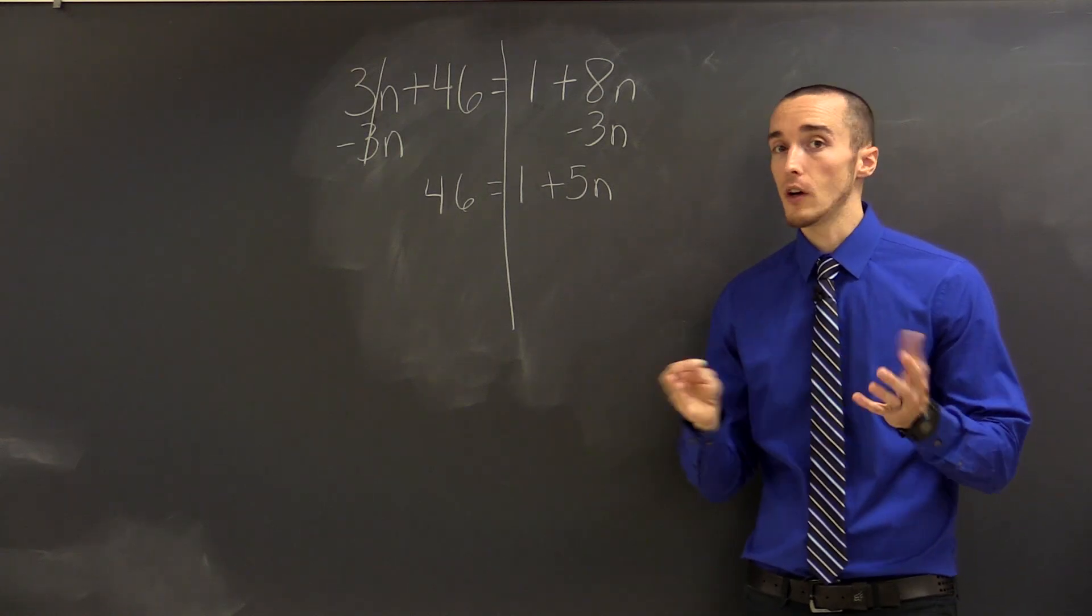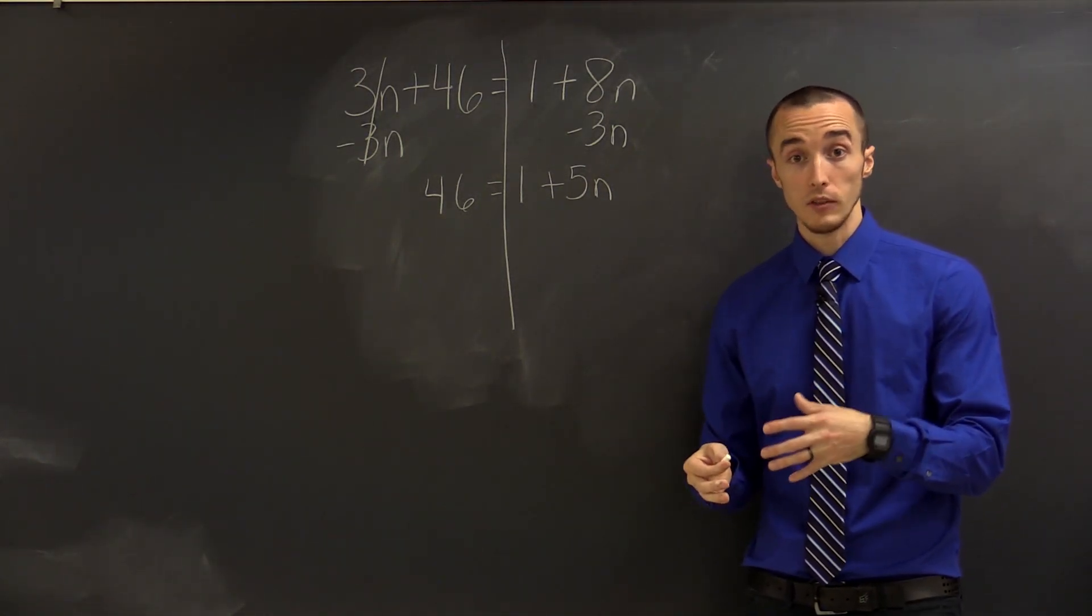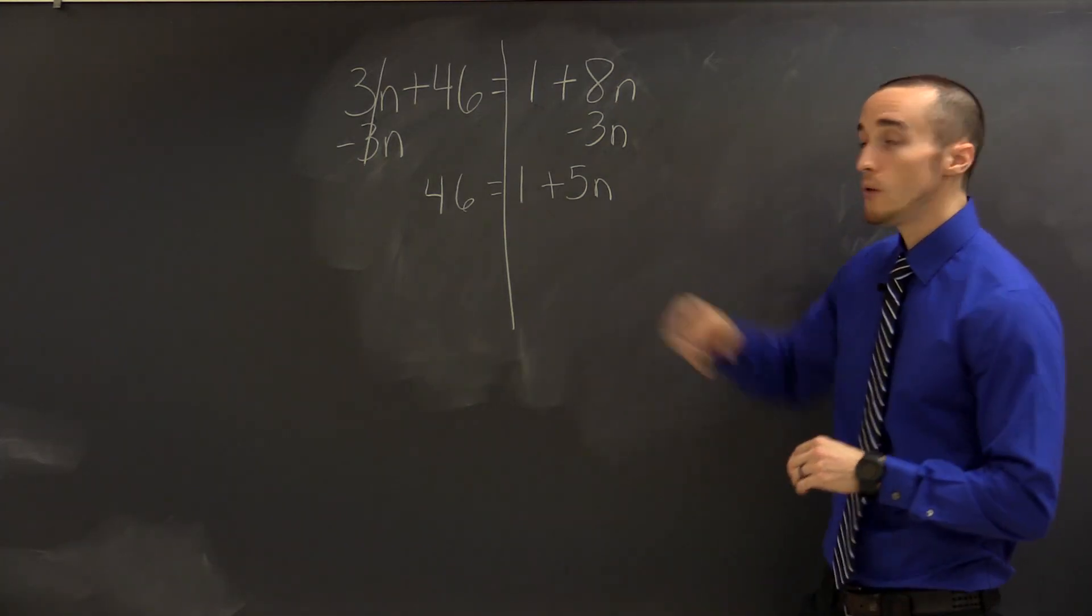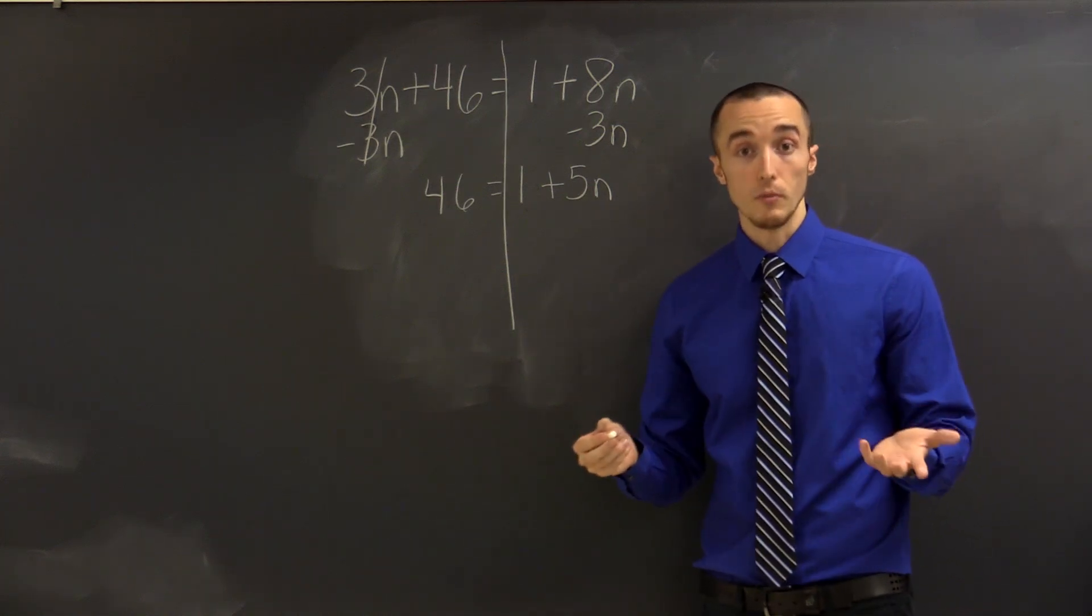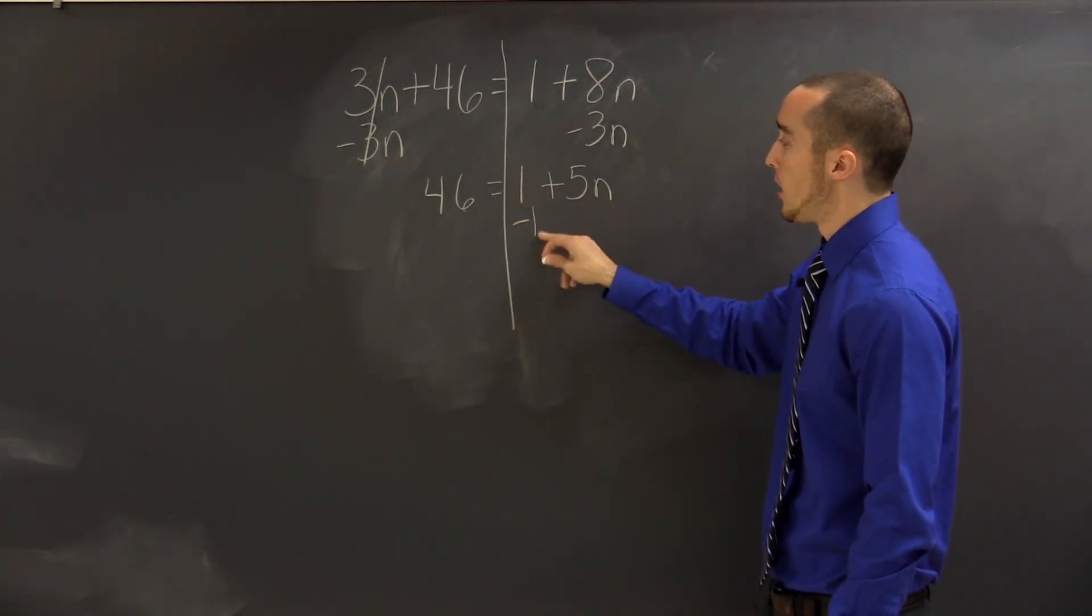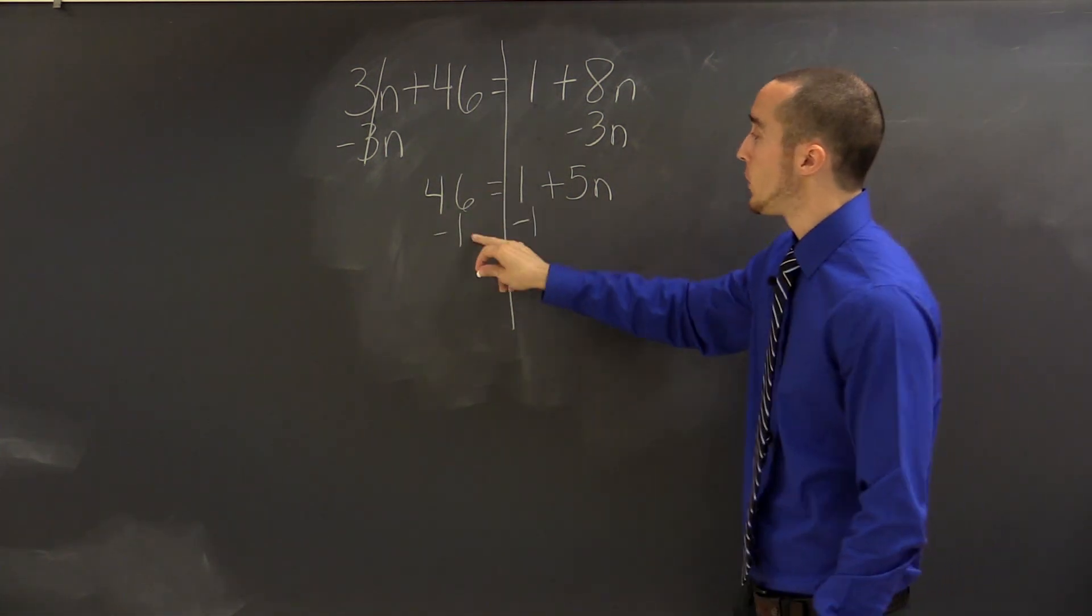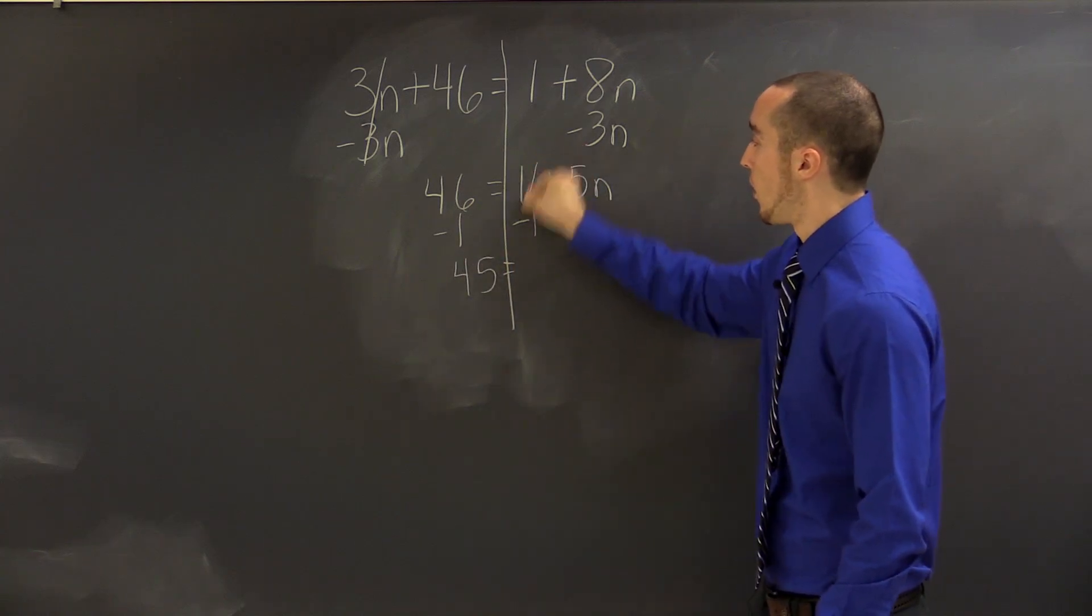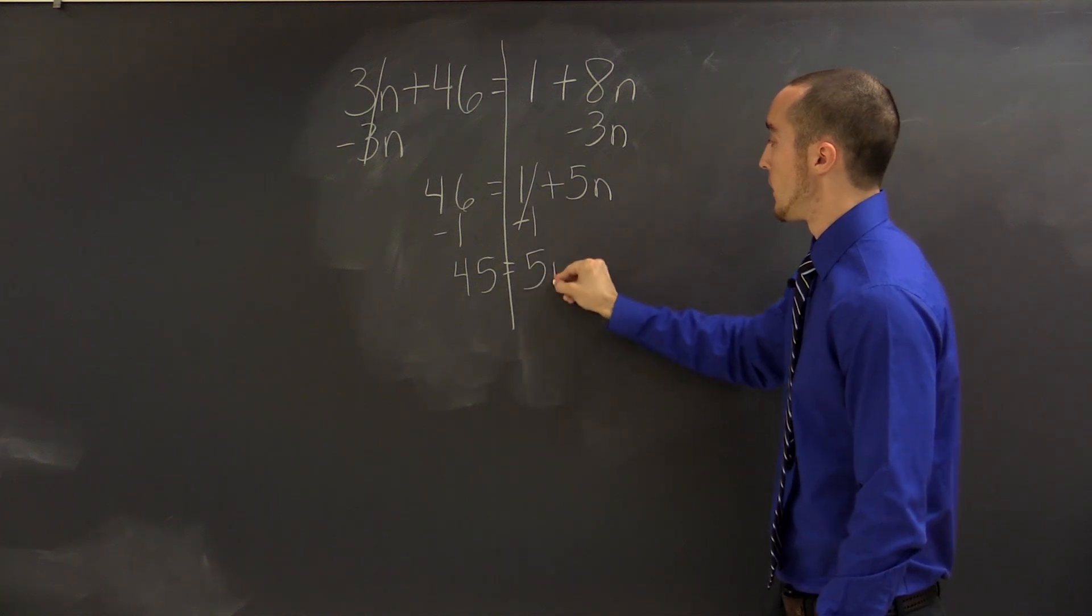Now, from here, we solve this like we would any two-step equation. Look for the constants. Those are numbers by themselves. And get rid of them first. So on the right-hand side of the equal sign, I do have a constant. It's positive 1. Inverse operation says subtract 1. So I'm going to subtract 1 from this 1. But again, if I do it on the right, I have to do it on the left. So let's see where that leaves us. 46 subtract 1 is 45. Our 1s cancel. And we can drop down the 5n to the next line.